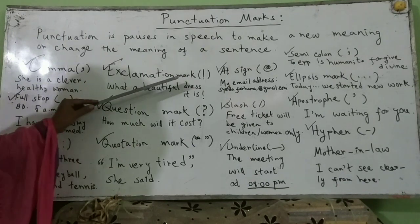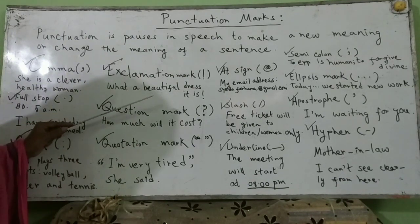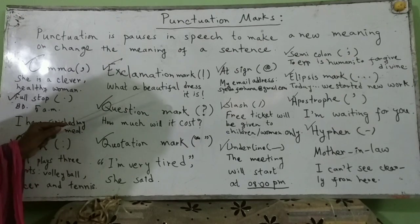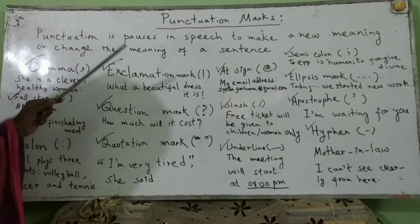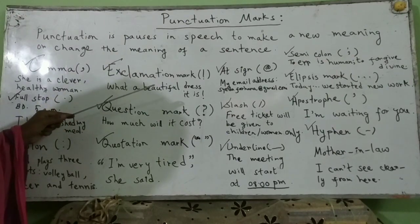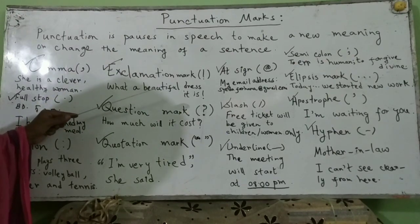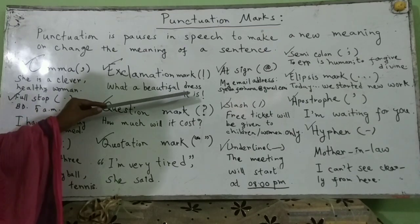Exclamation mark: an exclamation mark is used at the end of a sentence to express a certain emotion. For example: 'What a beautiful dress!' It is used to express strong feeling or emotion.